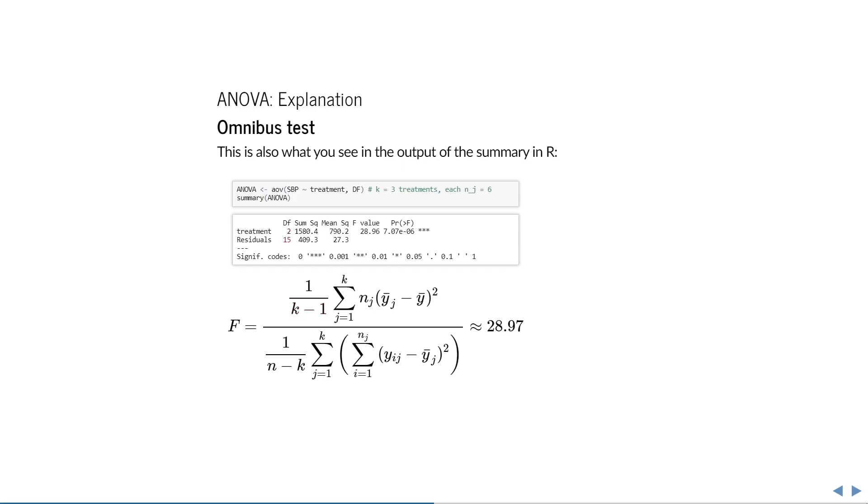Below that is the degrees of freedom of the residuals. We have 18 observations, and the denominator of the f-test uses 3 estimated group means. So there are 18 minus 3 equals 15 degrees of freedom left.